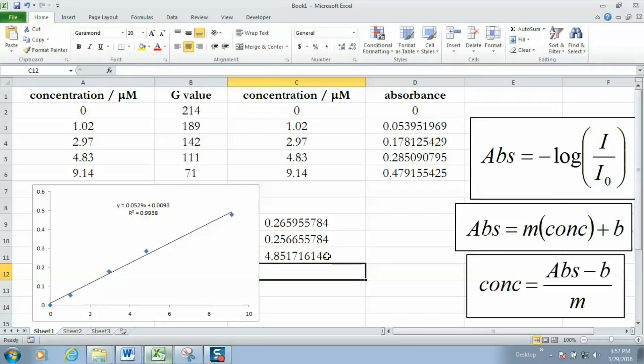And there we have it. The concentration of red dye number 40 that we found in the strawberry Powerade Zero is approximately 4.85 micromolar.